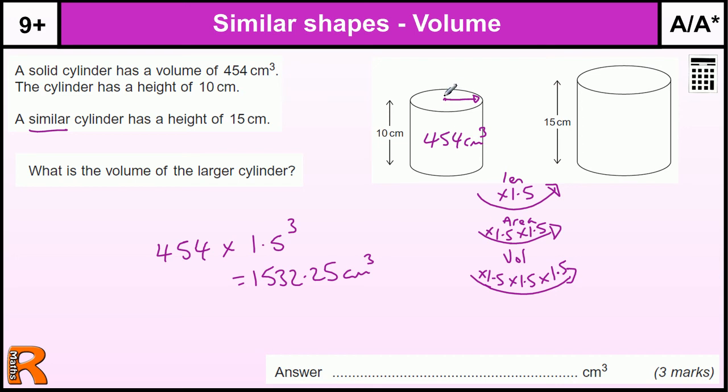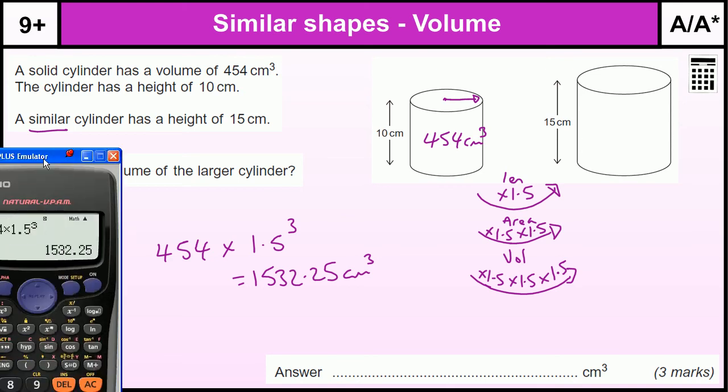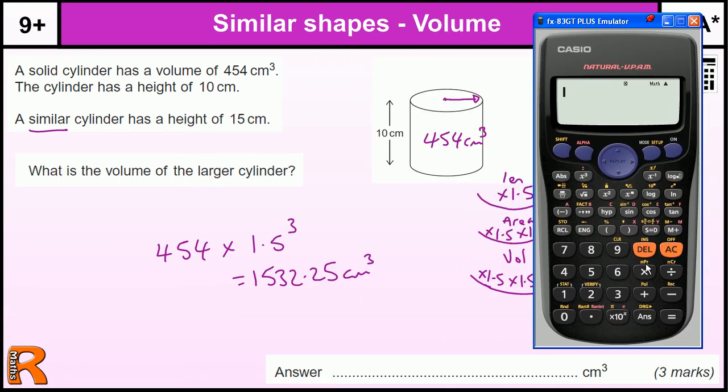And you would get something around about, actually let's work it out. We'd have 454 divided by 10. That gives us the area of the circle. Dividing by pi gives us the radius squared. Square root in that gives us the radius of 3.8.